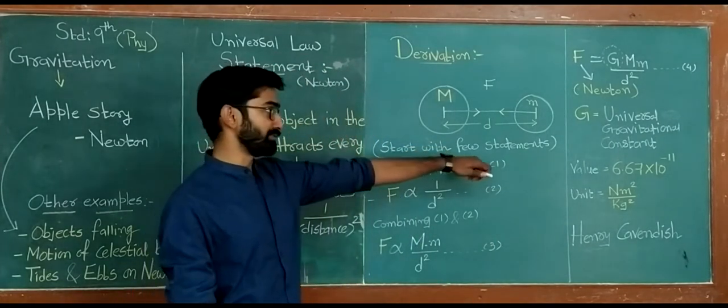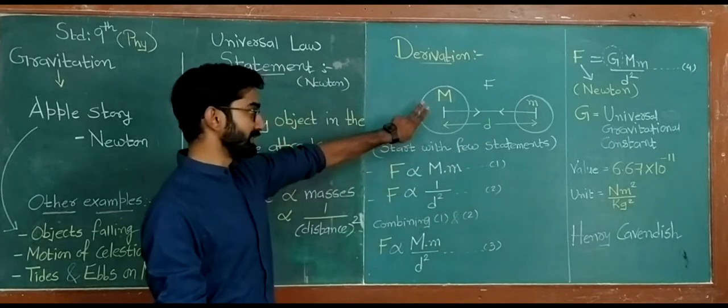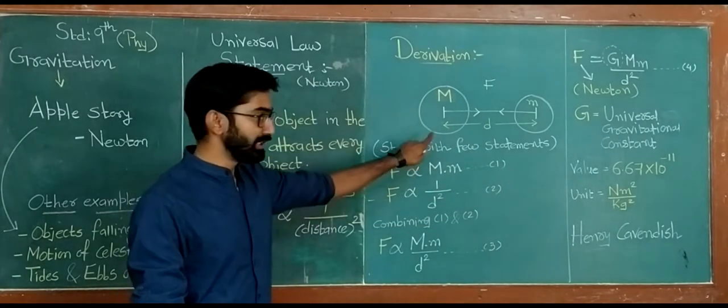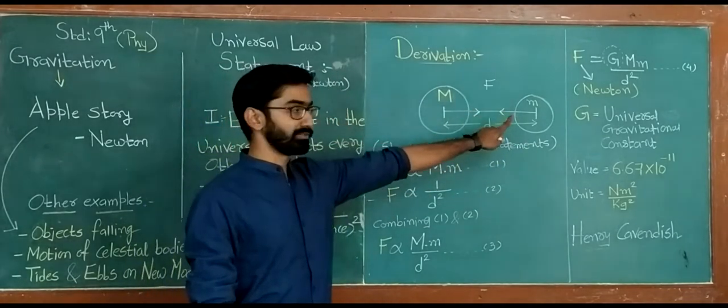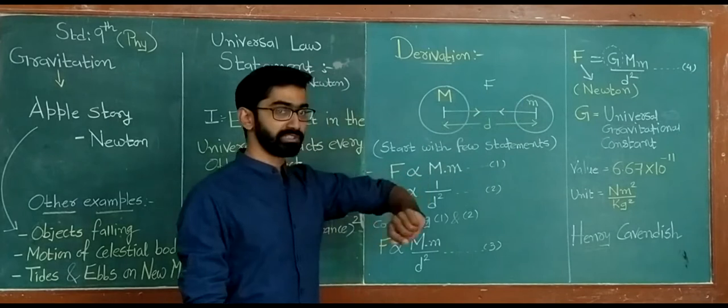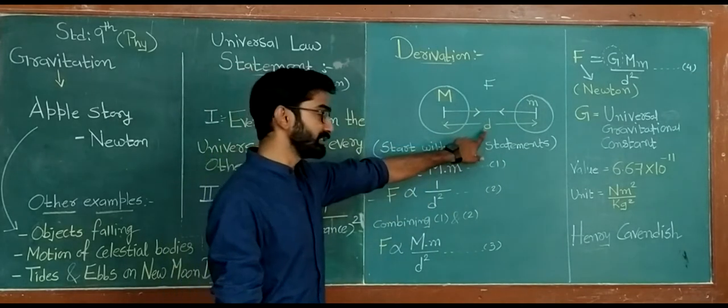Derivation always starts with two parts. One is the figure, then we have to write two statements. In the figure, we can see two objects. One having mass capital M, another one, small m. As you see, the distance between these objects is small d.